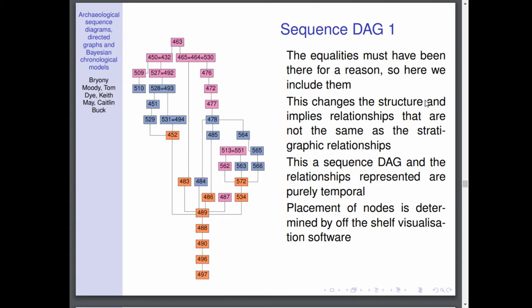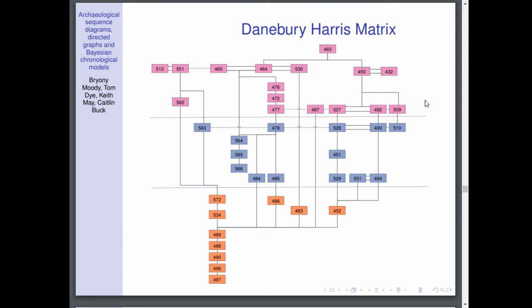Now the placements of the nodes, I admit, isn't the most intuitive with the phasing. This is why we've included the coloring. The placement of the nodes is determined by off-the-shelf visualization software that is used for mathematical DAGs. As a consequence of that, they want as little edges crossing over as possible, hence the placement of the nodes.